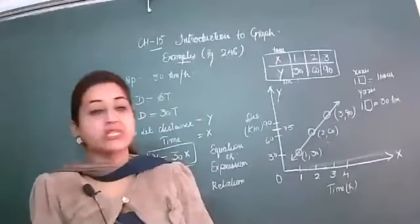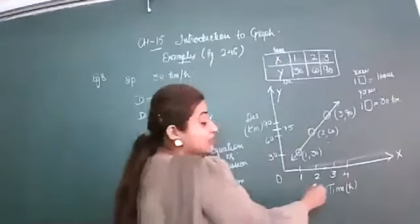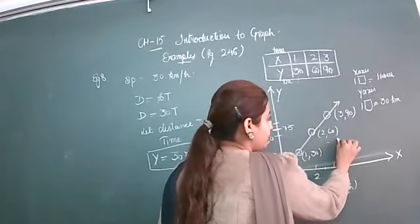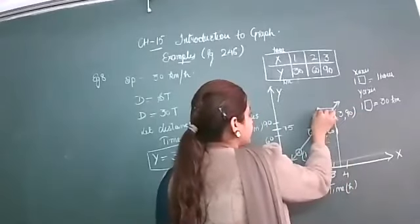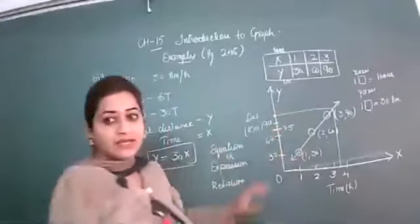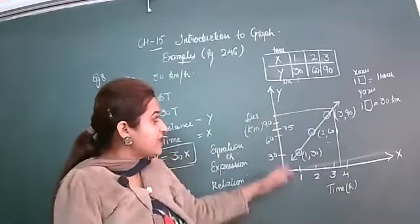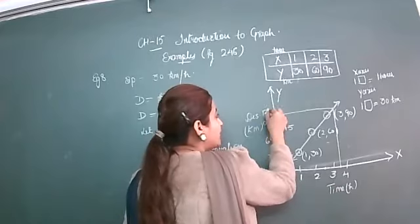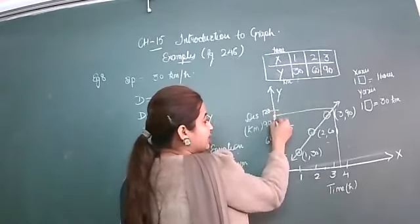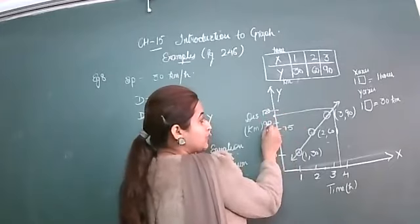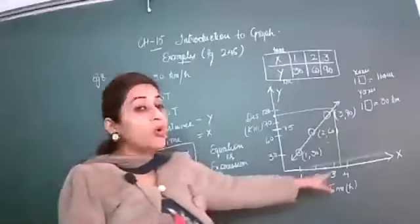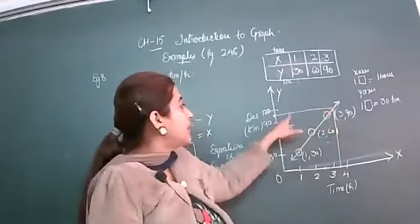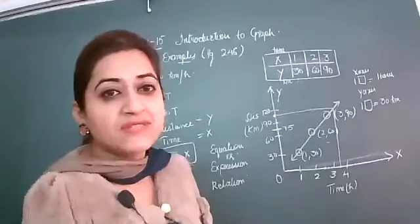Next part: the distance covered by Ajit in 3 and a half hours. At 3 and a half hours on the x-axis, joining to the line and reading the y-axis — the next value is 120, the midpoint between 90 and 120 is 15, so 90 plus 15 gives 105 kilometers. In 3 and a half hours, Ajit covers 105 kilometers.